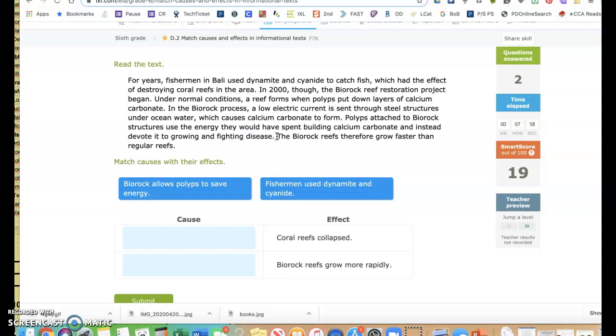Under normal conditions, a reef forms when polyps put down layers of calcium carbonate. In the BioRock process, a low electric current is sent through steel structures under ocean water, which causes calcium carbonate to form. Polyps attached to BioRock structures use the energy they would have spent building calcium carbonate and instead devote it to growing and fighting disease. The BioRock reefs, therefore, grow faster than regular reefs.